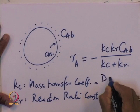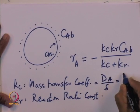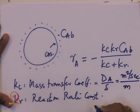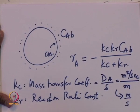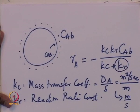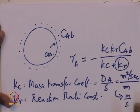The mass transfer coefficient kc = DA/δ. DA has units of m²/s and δ is in meters, so kc has units of meters per second. The rate constant kr for this first-order reaction should have the same unit as kc. Here kr is the rate per unit external surface area. If it were a volumetric rate constant the unit would be s⁻¹, but in this case the unit equals that of kc.